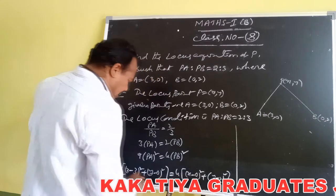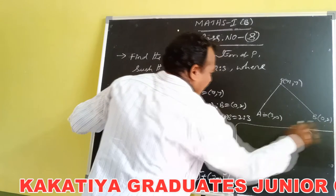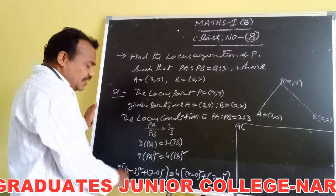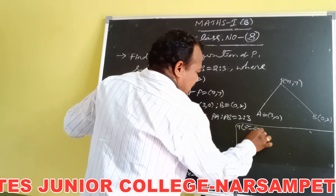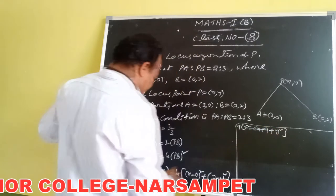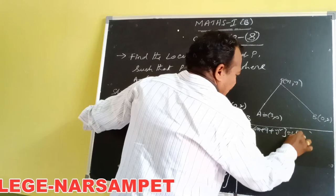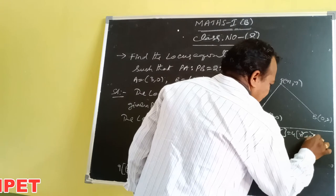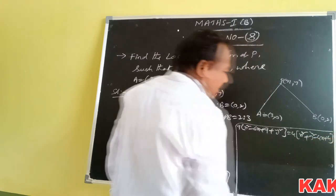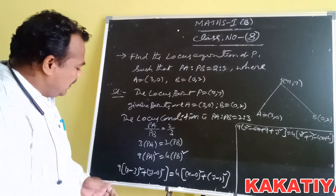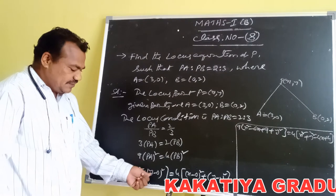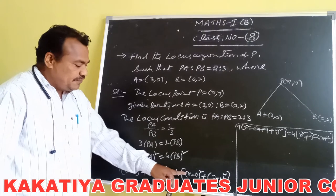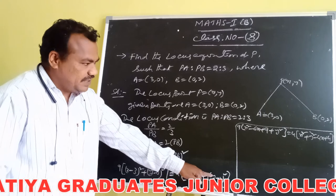Expanding, 9 of X minus 3 whole square, which is X squared minus 6X plus 9, plus Y squared, equals 4 of X squared plus Y squared minus 4Y plus 4.